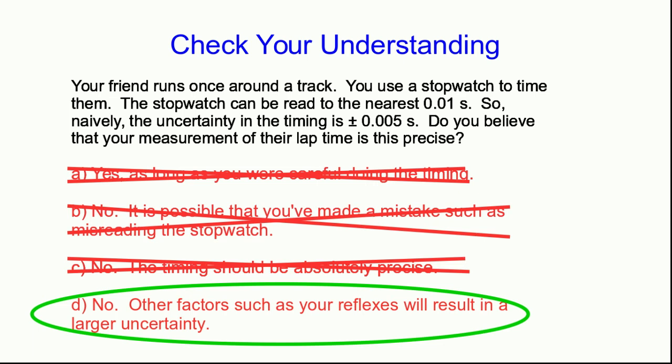So it's D. There are going to be other things, in this case your reflexes, which will result in a larger uncertainty than is possible with the stopwatch. Your reflexes probably introduce an uncertainty in this measurement of several tenths of a second, in fact.